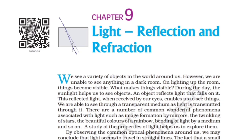We see a variety of objects in the world around us. However, we are unable to see anything in a dark room. On lighting up the room, things become visible. What makes things visible? During the day, sunlight helps us to see objects. An object reflects light that falls on it. This reflected light, when received by our eyes, enables us to see things. We are able to see through a transparent medium as light is transmitted through it.